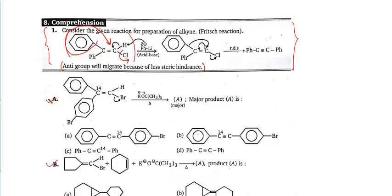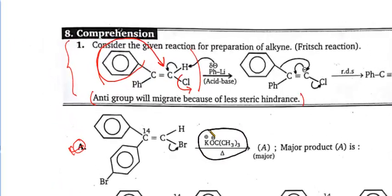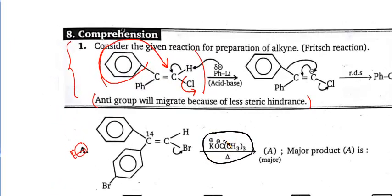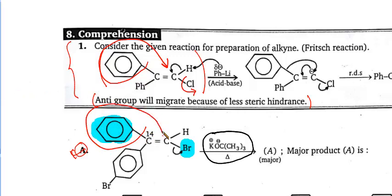Now let's do question A. See carefully — potassium tert-butoxide is a base, and the tendency of a base is to cause an elimination reaction. So Br will leave. The group exactly opposite to Br is the phenyl group, so the phenyl group will migrate here, and Br will leave.